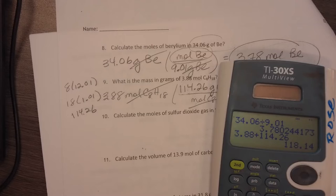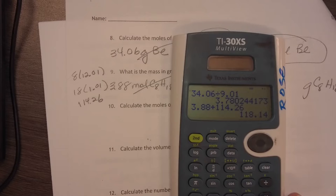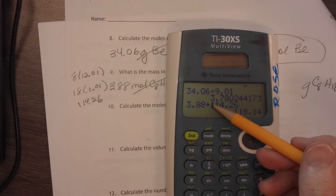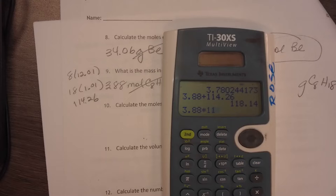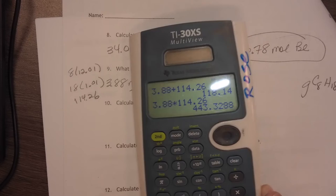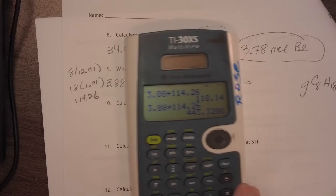I did that wrong. I did plus. My answer did not make sense. Have you ever done something and your answer didn't make sense? I was multiplying. I accidentally put plus. It's important to recognize when your answer doesn't make sense, times 114.26. Let's see if I get a more reasonable answer. Now I get 443.3288. I had 3 significant figures in my problem, so I have 3 significant figures in my answer.